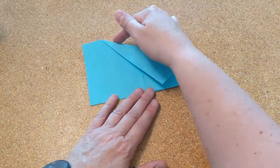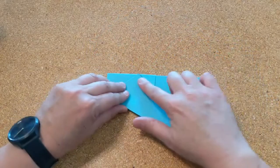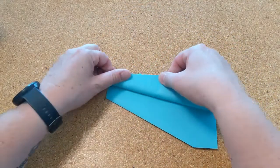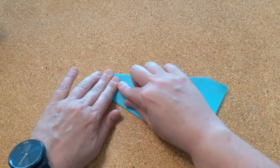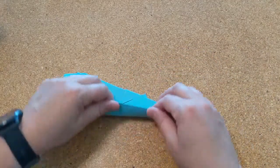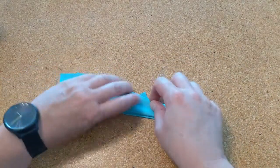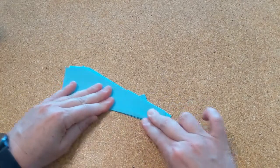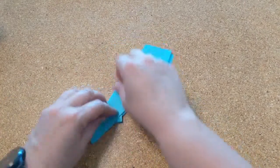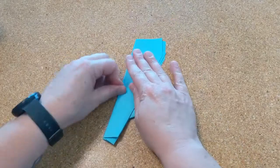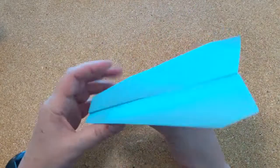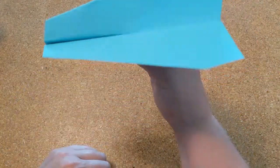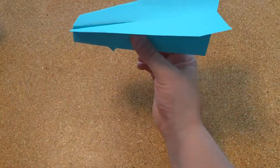Finally you're gonna fold this edge down to the bottom edge of your plane like this. Flip your plane over and do the same thing on the other side. Make sure that all of your creases are nice and tight. Then open your plane and you are ready to fly.